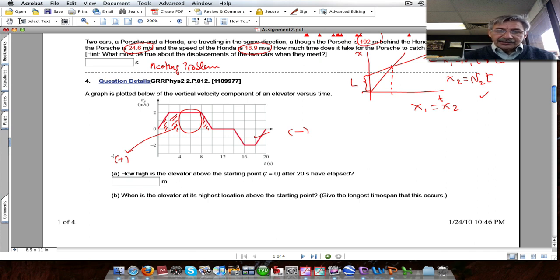The highest location above the starting point, that happened when the velocity changes direction. So the velocity changes direction when it becomes negative.